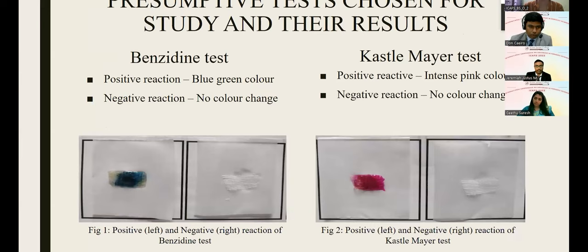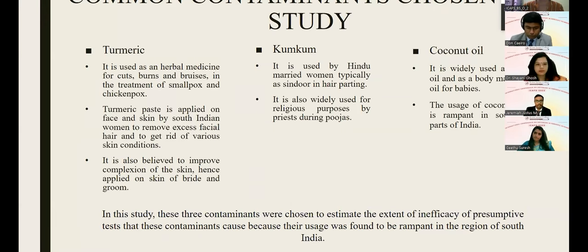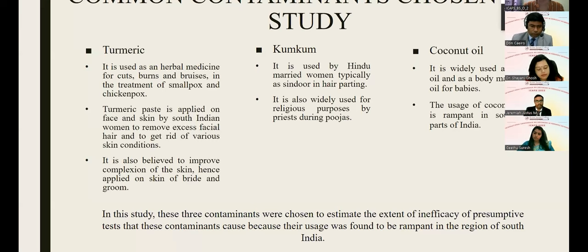The common contaminants chosen were turmeric, kumkum, and coconut oil. Turmeric is used as herbal medicine for cuts, burns, and bruises, and is applied as a paste by South Indian women to remove facial hair, improve complexion, and treat acne. Kumkum is traditionally worn by Hindu married women as sindur in their hair parting and used in religious purposes during pujas. Coconut oil is used as hair oil and as a massage oil for babies. These contaminants were chosen because their usage is rampant in South India.